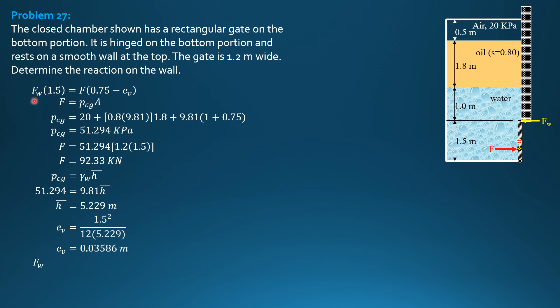Substitute above, we can now solve for FW. So F sub W times 1.5 equals 92.33 times quantity 0.75 minus 0.03586. So FW is equal to 43.96 kilonewtons.